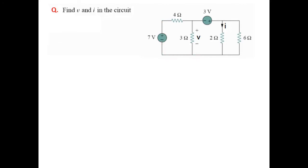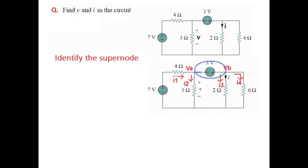But this 3 volt is between two non-reference nodes. Therefore, this will form the supernode. So this is the supernode. We make a big node.